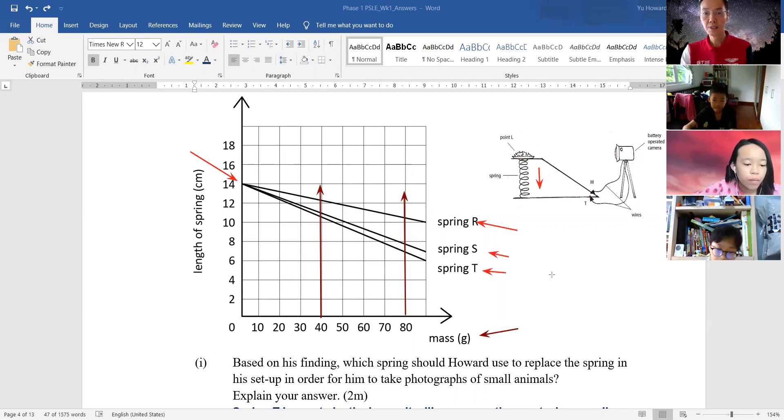Spring T. Spring T compress the most, right? Spring T compress the most means, with the same mass, it would be the shortest. So the answer is spring T. But how do you explain that?